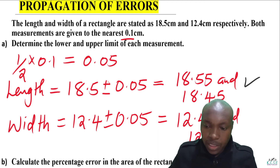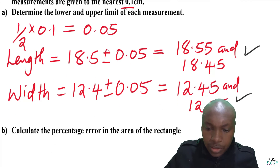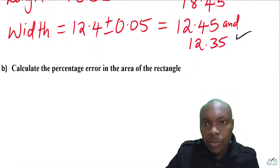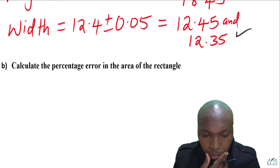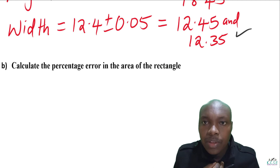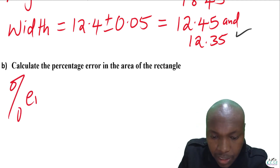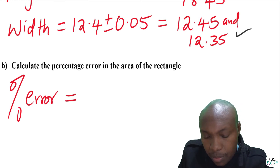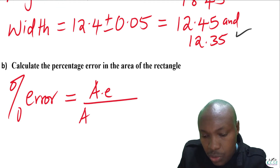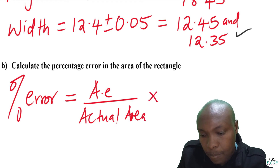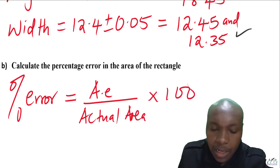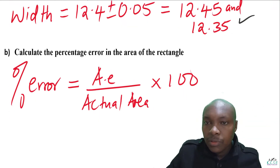Now let's go to the second part of the question, where we are required to calculate the percentage error in the area of the rectangle. The percentage error is given by the absolute error divided by the actual area, multiplied by 100.